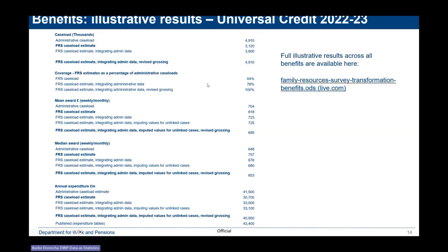In terms of coverage: the FRS caseload on its own — pure survey-based with Gross 4 — is 64% of the actual admin caseload. When you integrate admin data without revised grossing, you get to 78%. The new grossing control total brings us to 100%. Looking at mean and median awards, the admin caseload has an average award of just over £700 per month. Integrating admin data and imputing for unlinked cases has very little change on the mean award. There's variation across different benefits in the final impact when the revised grossing is also applied.